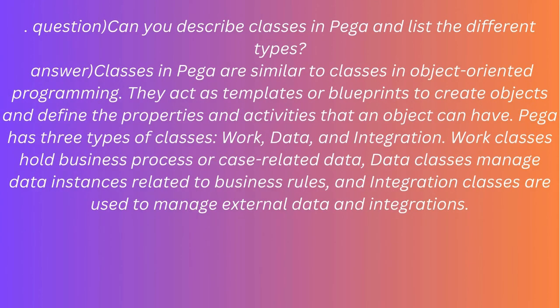Question: Can you describe classes in PEGA and list the different types? Answer: Classes in PEGA are similar to classes in object-oriented programming — they act as templates or blueprints to create objects and define the properties and activities that an object can have. PEGA has three types of classes: work, data, and integration. Work classes hold business process or case-related data; data classes manage data instances related to business rules; and integration classes are used to manage external data and integrations.